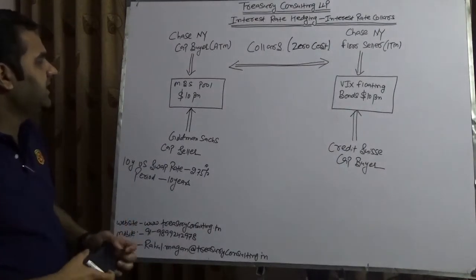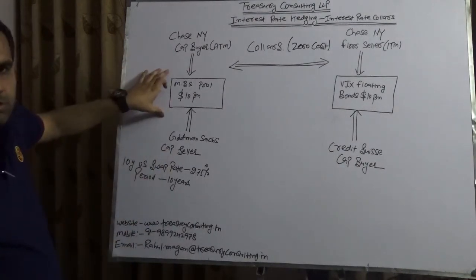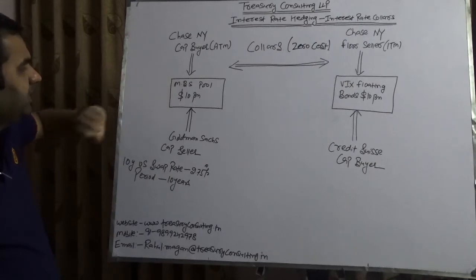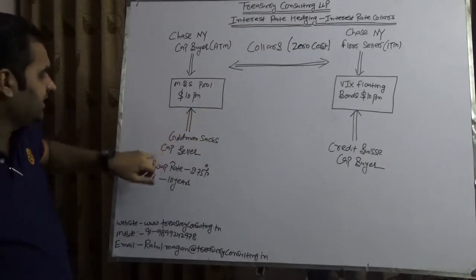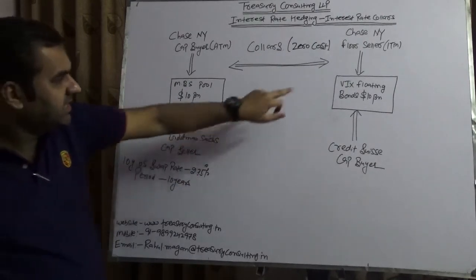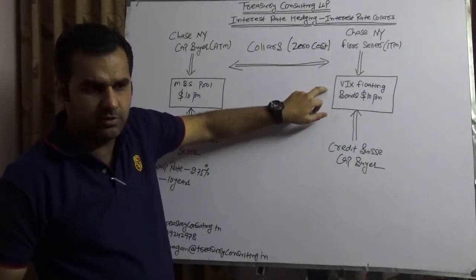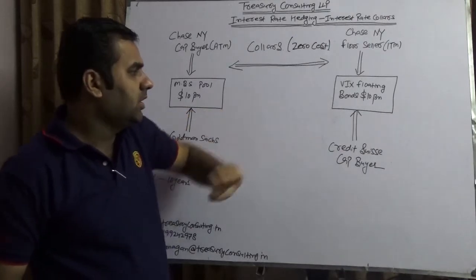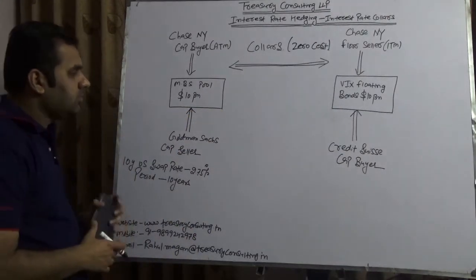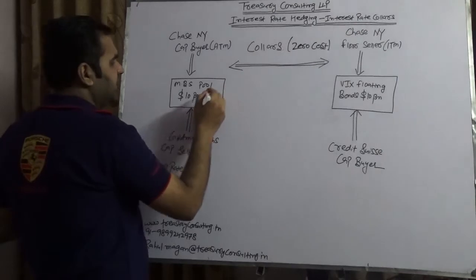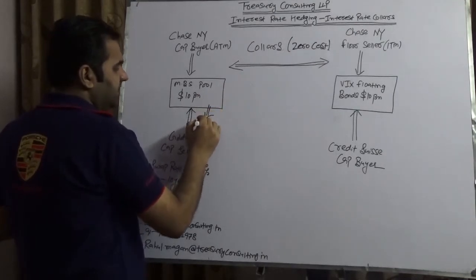So what Chase is doing. Chase is having an asset which is MBS pool, mortgage backed security pool of 10 billion dollars, where the tenure is 10 years. Chase also has another pool which is Wix bonds, volatility index bond which is again on the floating. It is again 10 million. Both are linked with a single underlying.